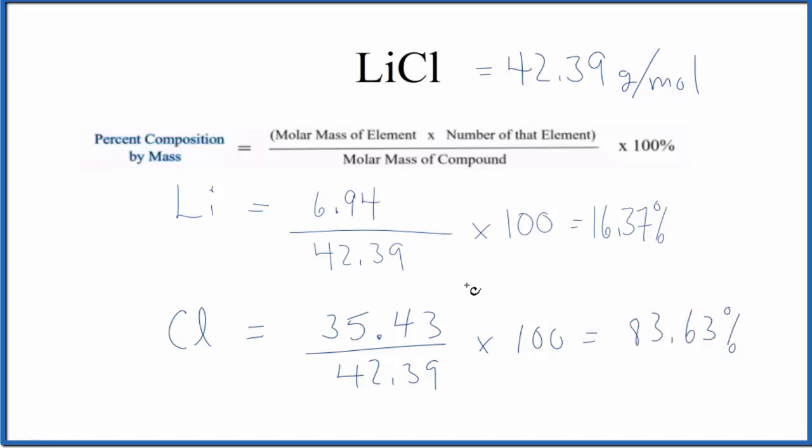So one way to think about this is that if you had 100 grams of lithium, 16.37 grams would be Li, and then 83.63 grams, that would be made up of the chlorine. So that's the percent composition for each element here in LiCl. This is Dr. B, and thanks for watching.